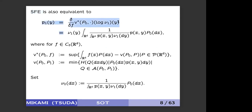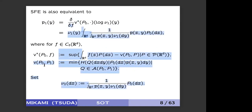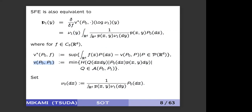Schrödinger's function equation is also equivalent to just one equation, not a system, where v* is the convex conjugate of Schrödinger's program. If you solve this equation, then setting nu_0(dx) by this equality, you solve Schrödinger's function equation. I'll refer to references for this later.